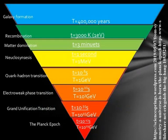The Planck Epoch is the earliest period of time in the history of the universe. In Big Bang cosmology, the Planck Epoch, or Planck era, is the earliest stage of the Big Bang, before the time past was equal to the Planck time, TP, or approximately 10 to the minus 43 seconds. Planck time is the time it would take a photon traveling at the speed of light to cross a distance equal to the Planck length. This is the quantum of time, the smallest measurement of time that has any meaning, and is equal to 10 to the minus 43 seconds. Within the framework of the laws of physics as we understand them today, no smaller division of time has any meaning; therefore, we can say only that the universe came into existence when it already had an age of 10 to the minus 43 seconds.